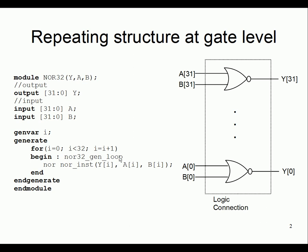We tag this block with a specific unique label — for example, 'nor32_gen_loop' for a 32-bit NOR generation loop. Then we write the NOR instantiation with an instance name for this generate block, connecting y[i] to a[i] and b[i]. Since this loop is computed before simulation starts, it expands into a gate-level model with port connections y[0] a[0] b[0], y[1] a[1] b[1], through y[31] a[31] b[31] — 32 instances expanded using this generate block.